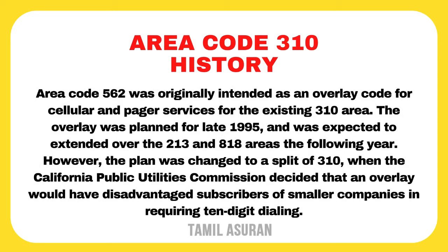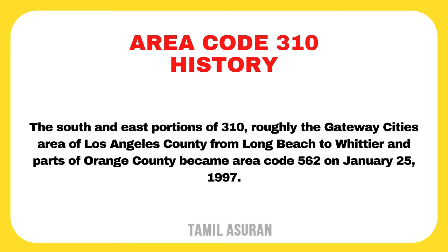Area code 562 was originally intended as an overlay code for cellular and pager services for the existing 310 area. The overlay was planned for late 1995 and was expected to extend over the 213 and 818 areas the following year. However, the plan was changed to a split of 310 when the California Public Utilities Commission decided that an overlay would have disadvantaged subscribers of smaller companies by requiring 10-digit dialing.